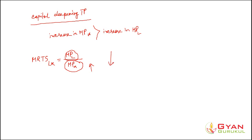As technological progress takes place and increases, the marginal productivity of capital increases beyond the marginal productivity of labor. As a result, this leads to a fall in the marginal rate of technical substitution. If we try to draw this in a diagram, it would look like this.